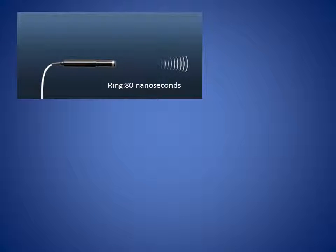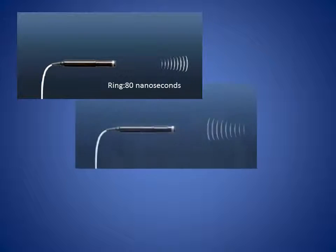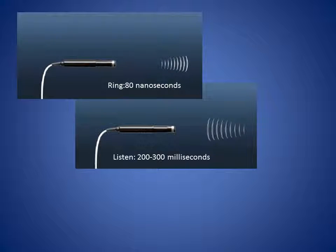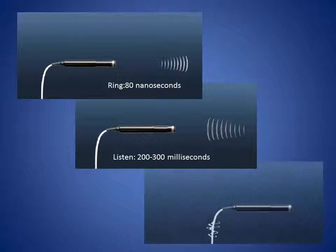When the current is switched off, reflected sound waves, or echoes, cause the crystals to vibrate, producing electricity. This electrical signal is then processed by the ultrasound machine to produce an image.